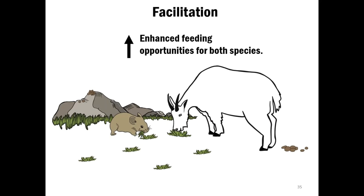And then finally, facilitation. This occurs when the larger herbivore eats grass and creates a grazing lawn with short, nutritious grass that the pika can then take advantage of. And through the deposition of their fecal matter, water, and urine, they return nutrients onto the landscape, which helps regenerate forage, resulting in enhanced feeding opportunities for both species.